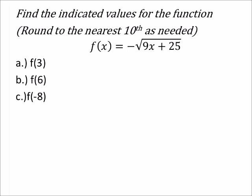This is f of 3, and it tells us what that f of x is. We're going to take the negative square root of 9, but now we're saying that x is 3, and then we're going to add 25. So, what does that give us?